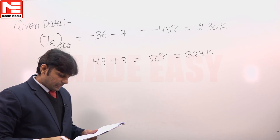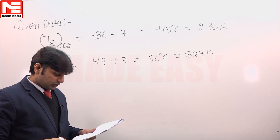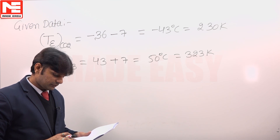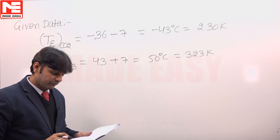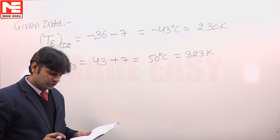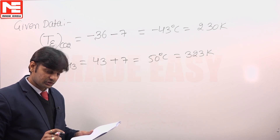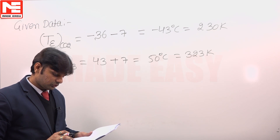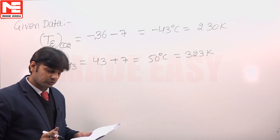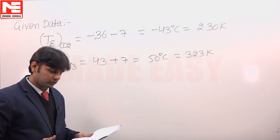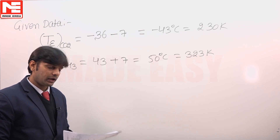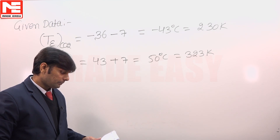Now, assuming the lift — condenser minus evaporator — to be the same for both the CO2 and ammonia cycle, and the actual COP of the system to be equal to the Carnot COP, we have to calculate the value of power input to the ammonia compressor.